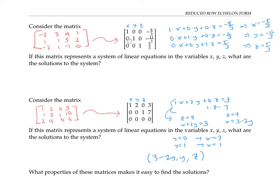So what properties of these two matrices makes it particularly easy to read off the solution to the associated system of linear equations? One property is the presence of leading ones — the first non-zero number in each row is a one. Another property is the presence of lots of zeros: for each leading one, all the numbers above it in its column are zeros. We'll use these two properties, along with a couple others, to define something called reduced row echelon form.